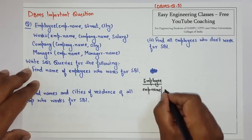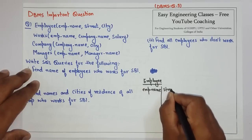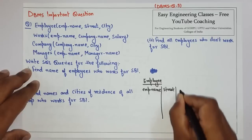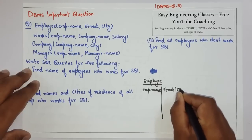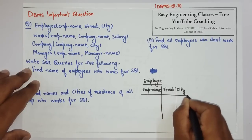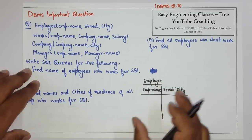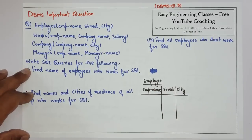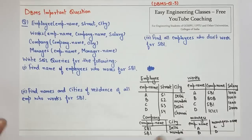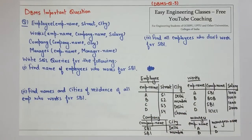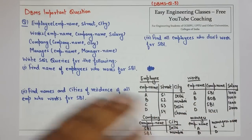So the employee table has employee name, street, and city. We have created dummy tables: employee, works, company, and managers.